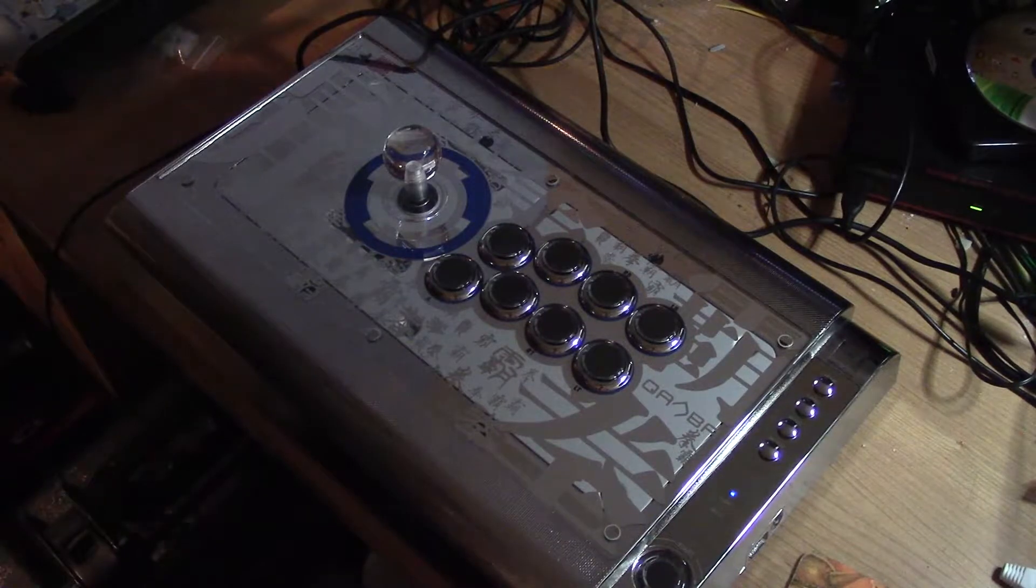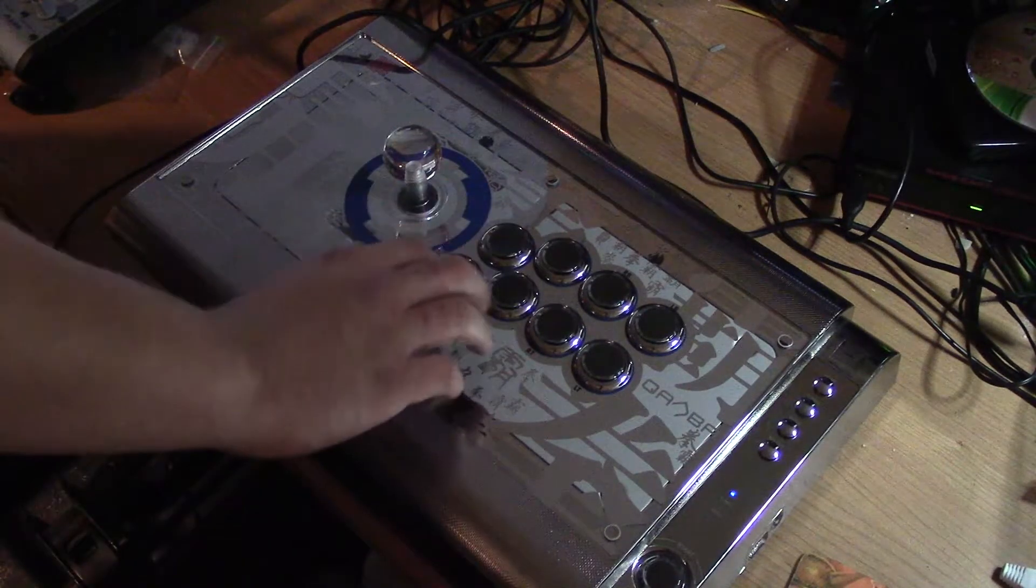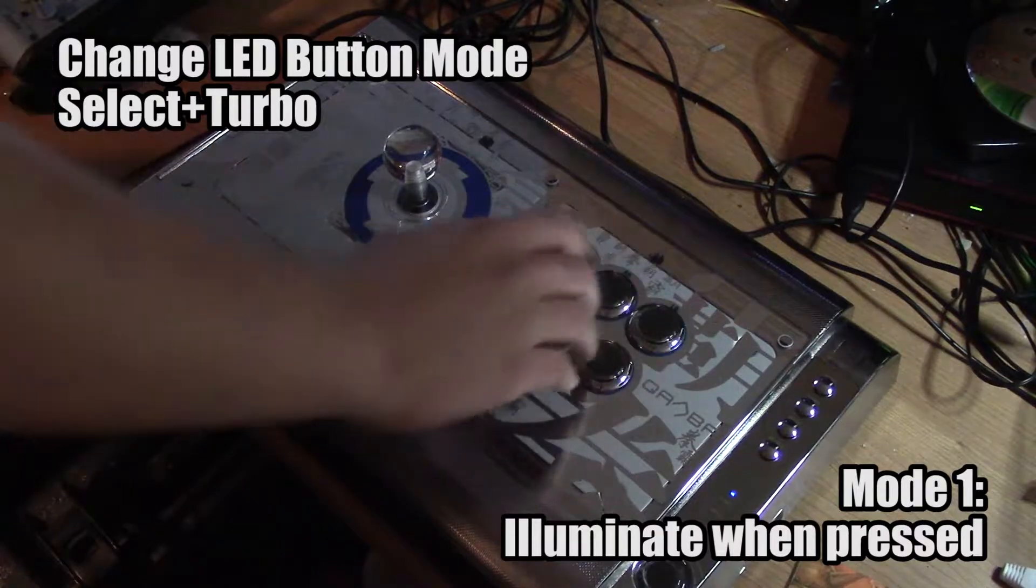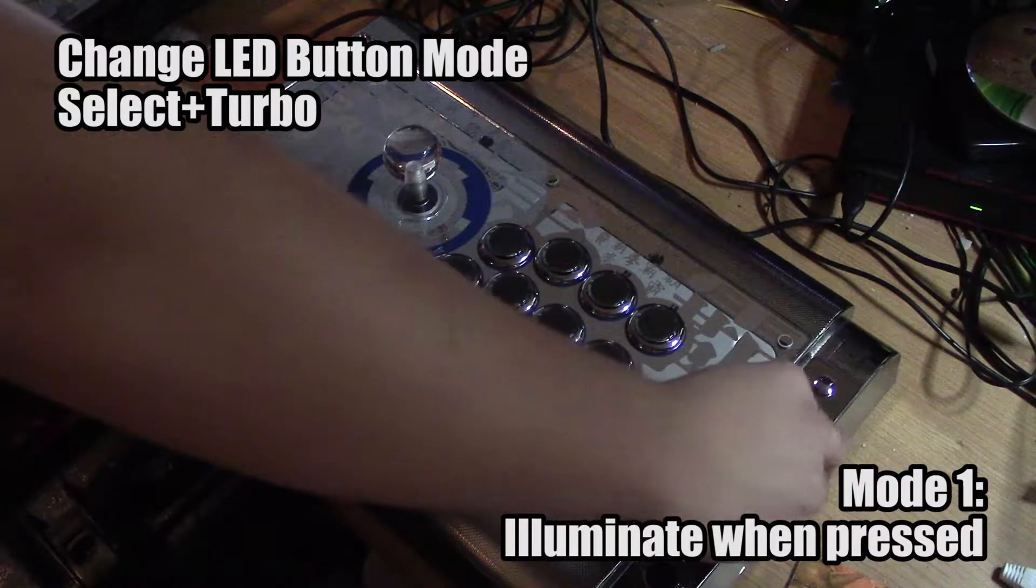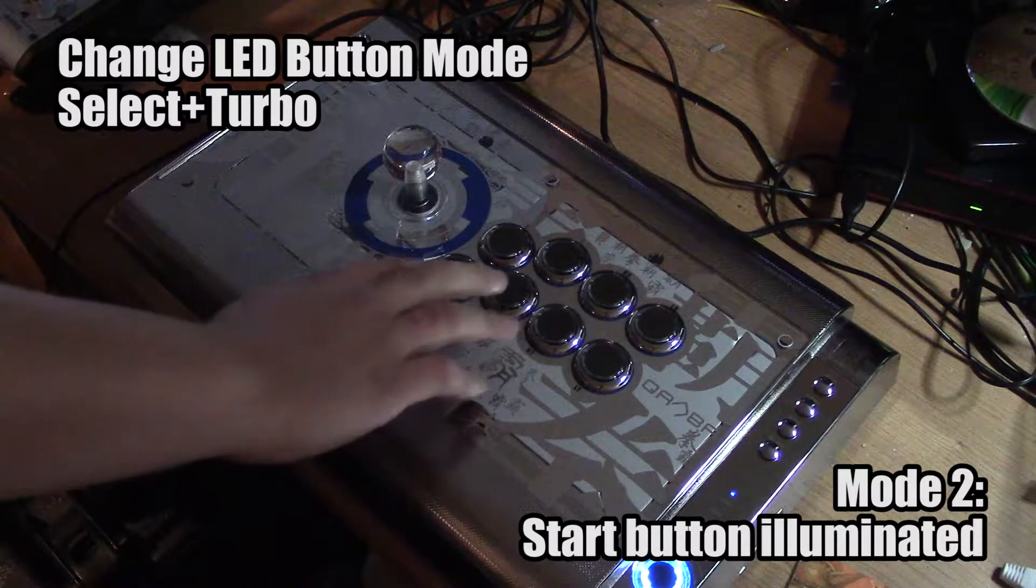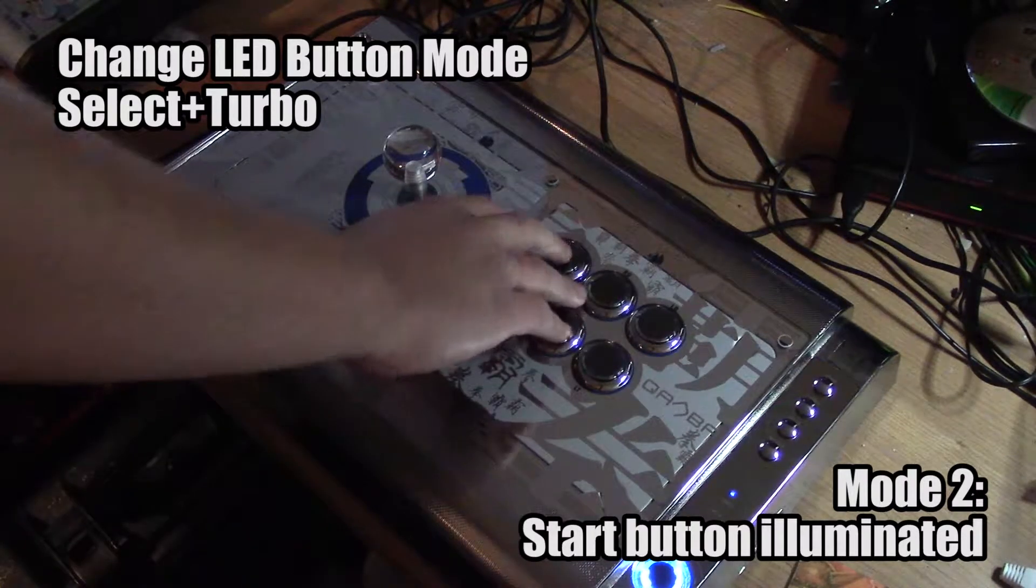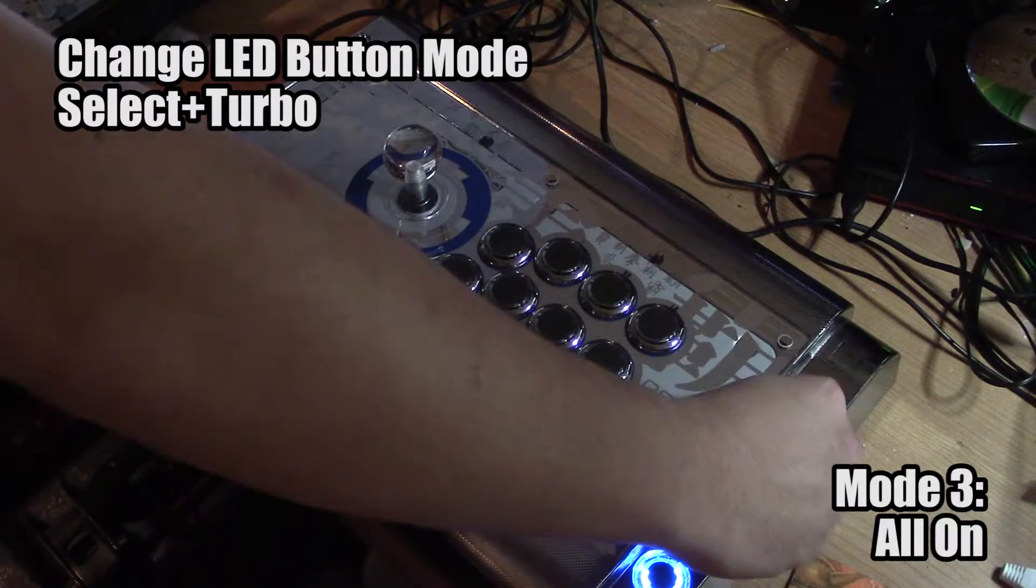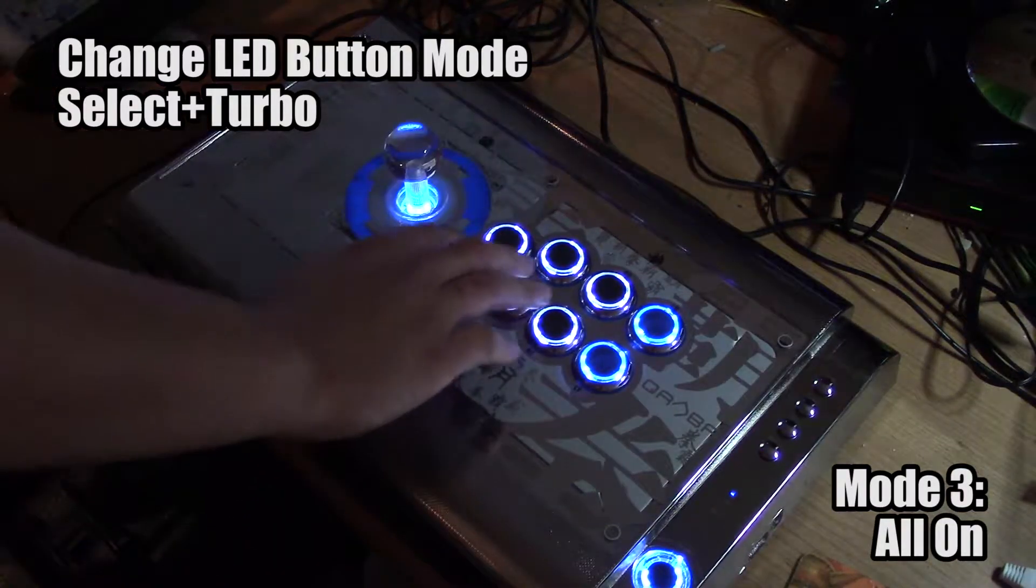There are four different modes for the buttons. The first one is the standard illuminated button mode. And then if you push turbo and select at the same time, you can see the start button illuminates and stays illuminated. And the other buttons don't actually function in the LEDs.